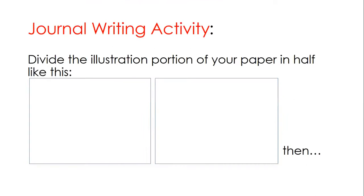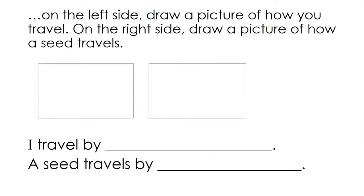Your journal writing activity for this week: usually in the past you have drawn one picture and given some sentences about it. This time, I want you to divide the illustration part of your paper in half. Draw a line down the center, then on the left side draw a picture of how you travel, and on the right side draw a picture of how a seed travels. You'll be writing two sentences — one might say 'I travel by ___' and the other 'A seed travels by ___.' You can always go back to this slideshow to remind yourself how seeds travel.